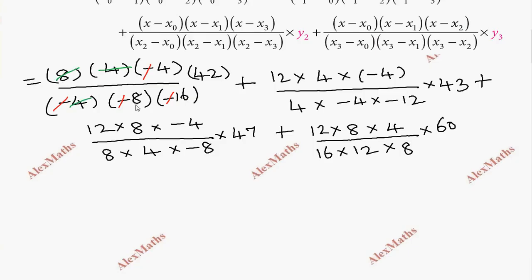Now simplifying: The first term equals 10.5. For the second term, the two minus signs cancel. After canceling common factors - 4 and 4 cut, 12 and 12 cut - we get 43. For the third term, after canceling 8 and 8, 4 and 4, we get 3 times 47 divided by 2 which equals 70.5.